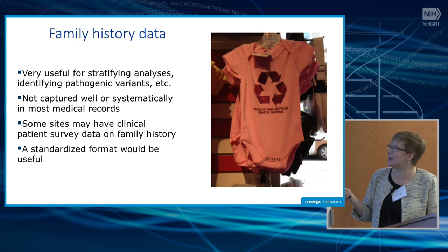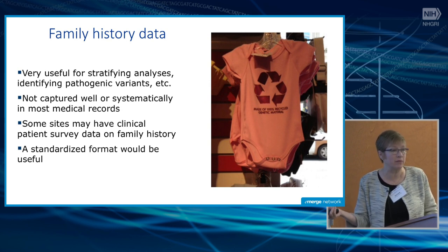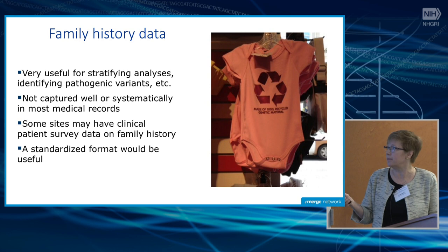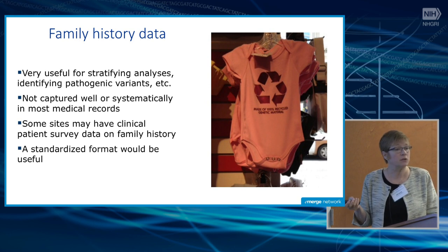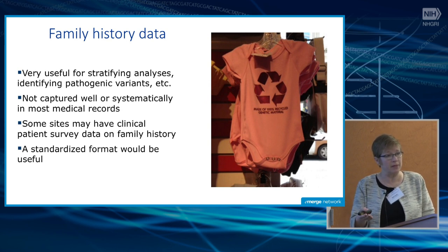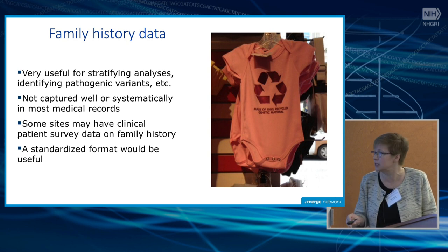The family history data is incredibly useful. These are genetic diseases, and we have a big focus on Mendelian conditions at the moment. Family history is useful in stratifying the data and looking for penetrance. It's also very useful for looking at co-segregation — when you find someone with a variant, you can look for the phenotype not only in them but in their family members. That's a very useful way to assess penetrance.